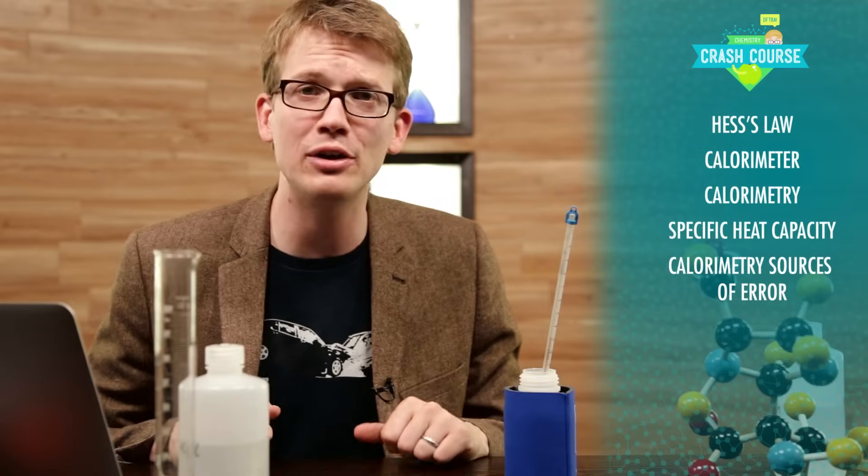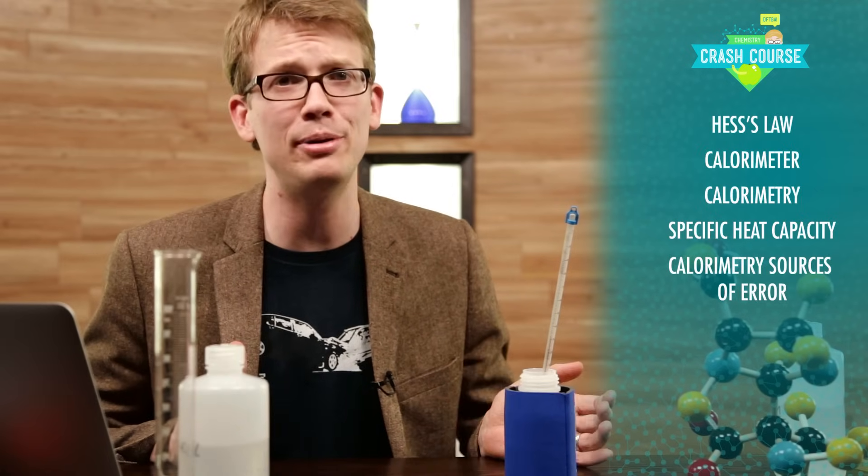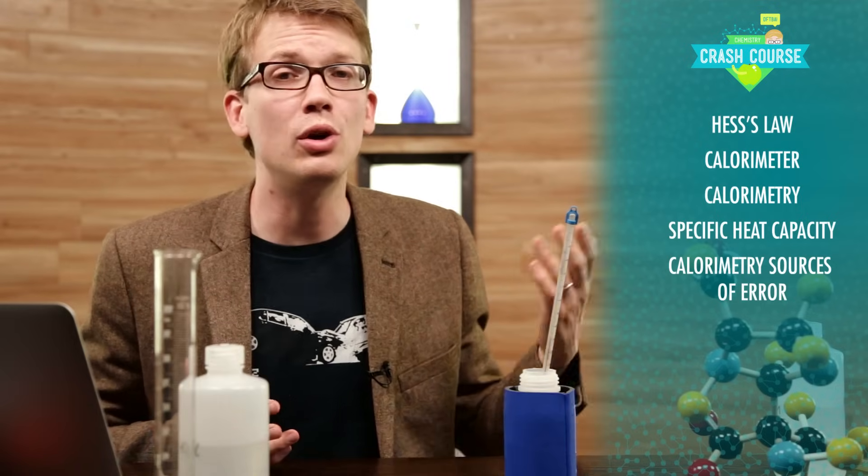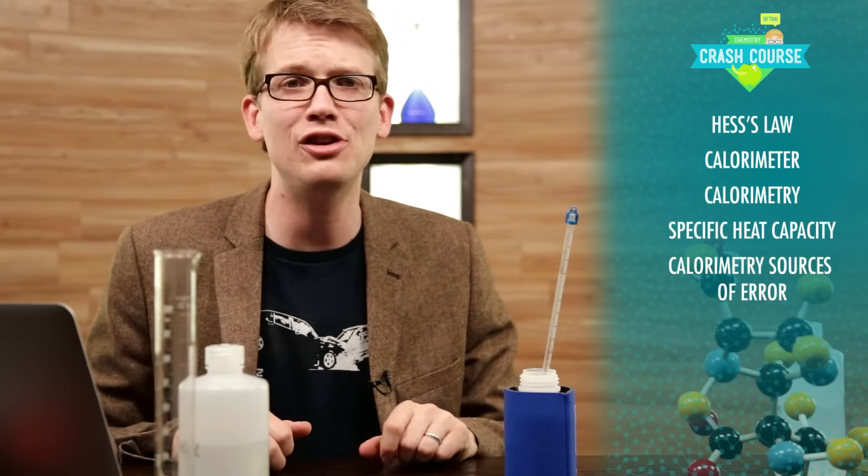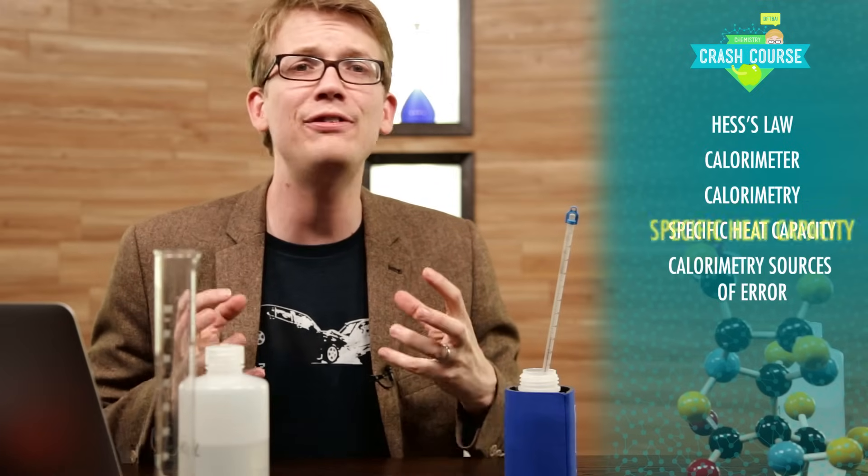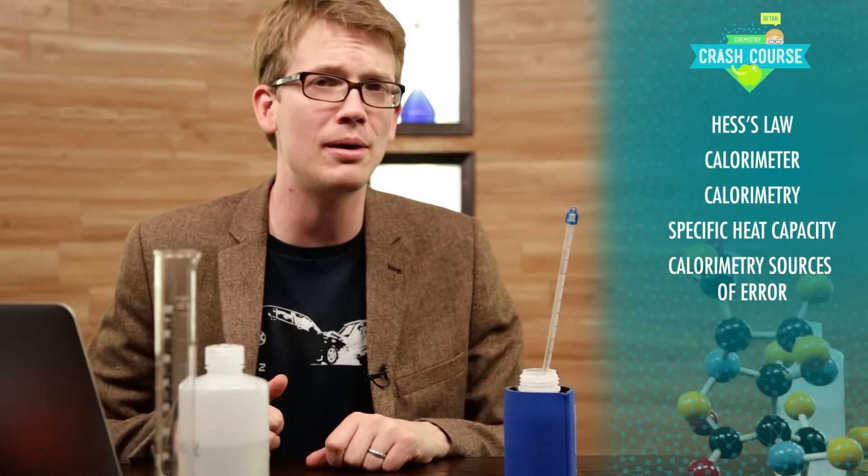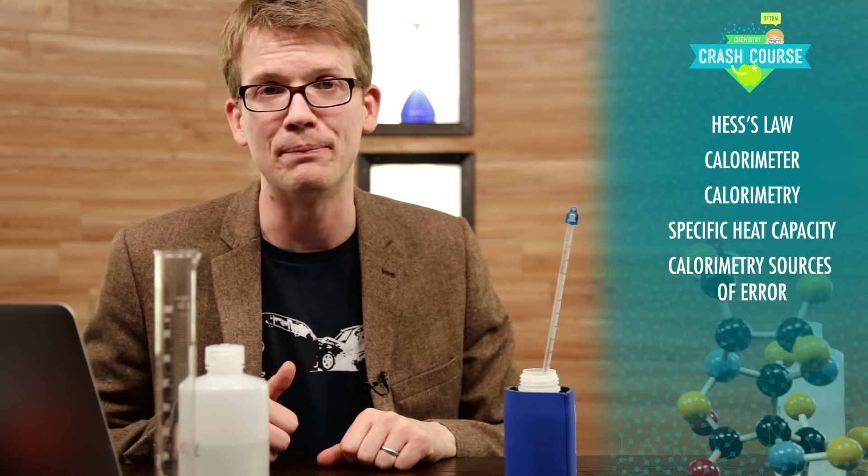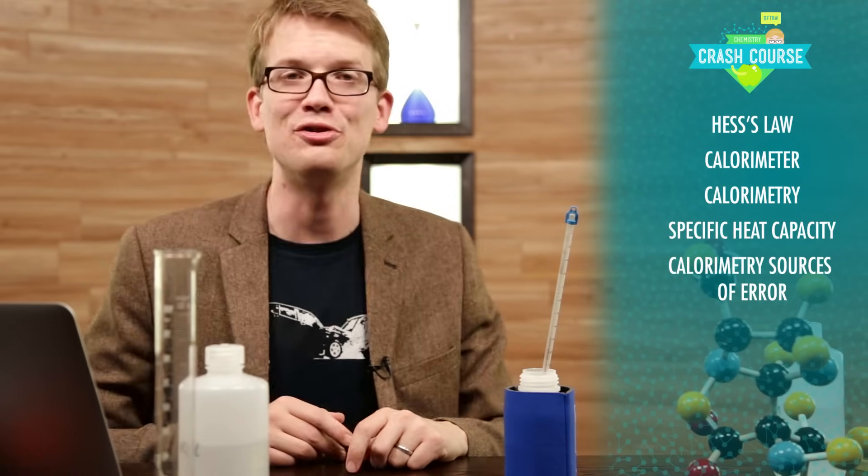Thanks for watching this episode of Crash Course. If you paid attention, you learned that we don't necessarily have to use standard enthalpies of formation to solve Hess's law. You learned what a calorimeter is, that calorimetry is another way to investigate heat changes and chemical reactions, and that specific heat capacity tells us how much heat energy affects the molecules in a substance without changing its temperature. And finally, you learned some potential sources of error related to calorimetry.